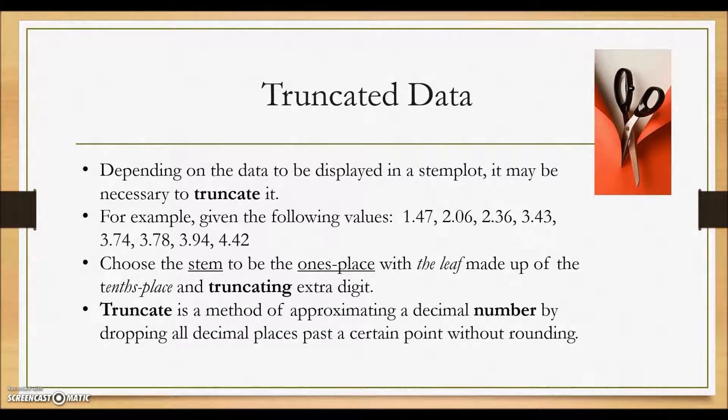Truncate is a method of approximating a decimal number by dropping all decimal places past a certain point without rounding. For example, if we take the first number 1 and 47 hundredths.